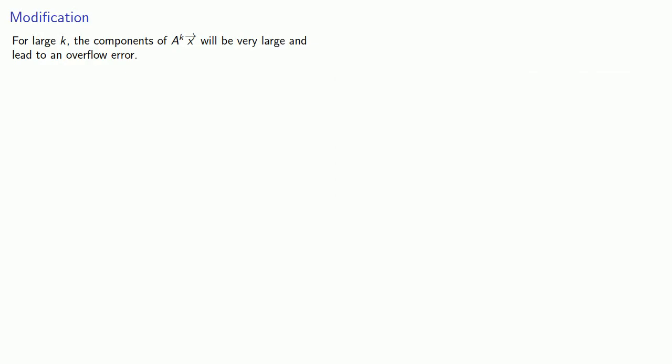So what happened? For large k, the components of A to power k times x will be very large and lead to an overflow error.